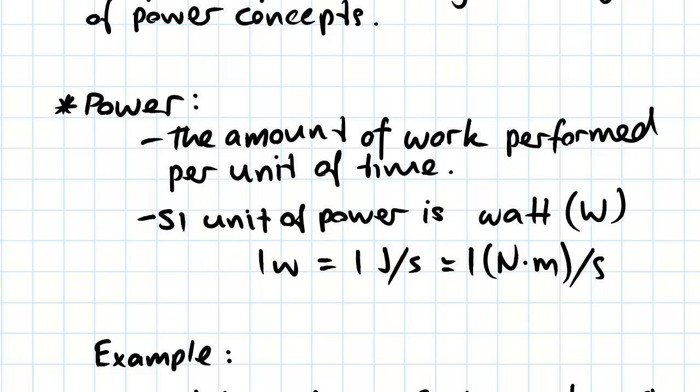That gives the SI units of power as watts, and 1 watt is equal to joules per second, so that's work (joules) per second (time), and that's also equal to Newton meters per second.